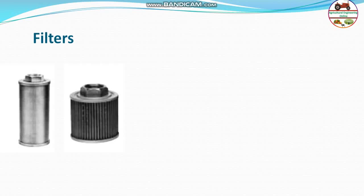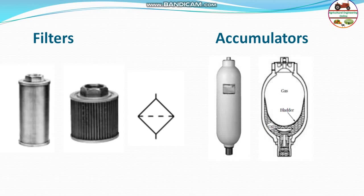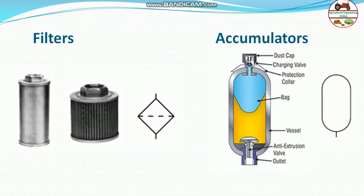Coming to filters and accumulators. Filters are important components that prevent foreign particles or materials from passing through other parts, preventing clogging or damage. Accumulators accumulate energy when it is not required, and supply instantaneous pressure when more pressure is needed. They operate on the universal gas law — compressed gas is compressed when there is more pressure, and supplies back pressure to the system when there is less pressure.